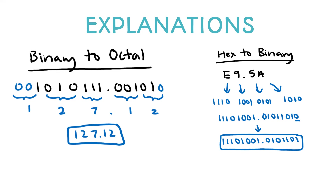For hex to binary, it's a similar process. You take each hexadecimal digit and convert it to its binary equivalent. For example, E in binary is 1-1-1-0, and you do that for each single digit. There's no binary equivalent for the decimal point, so you just put it there to divide the two numbers.